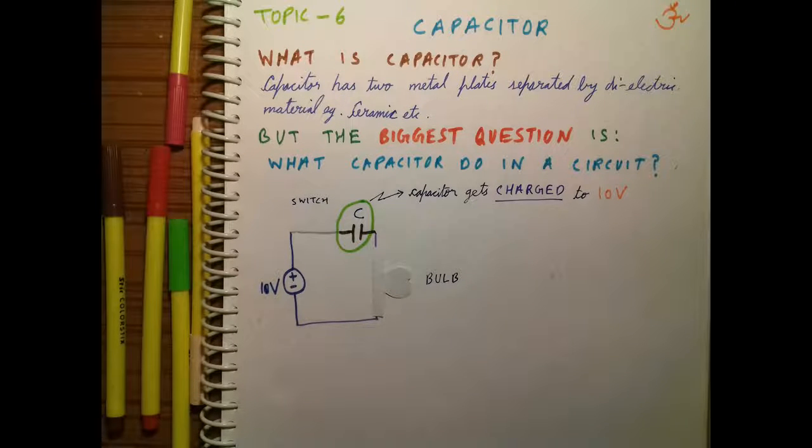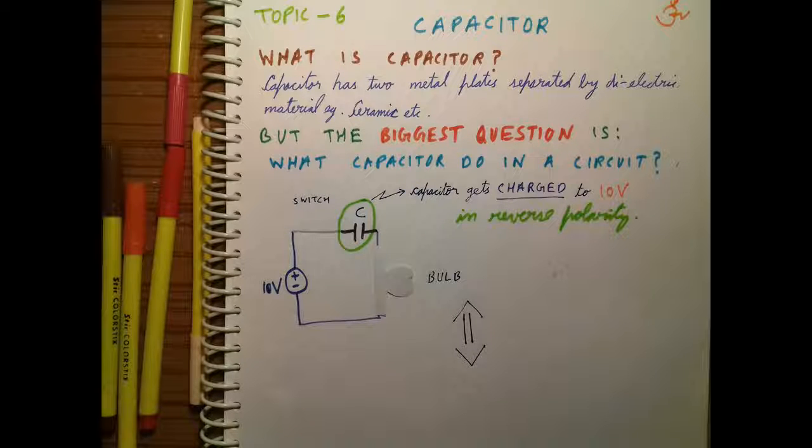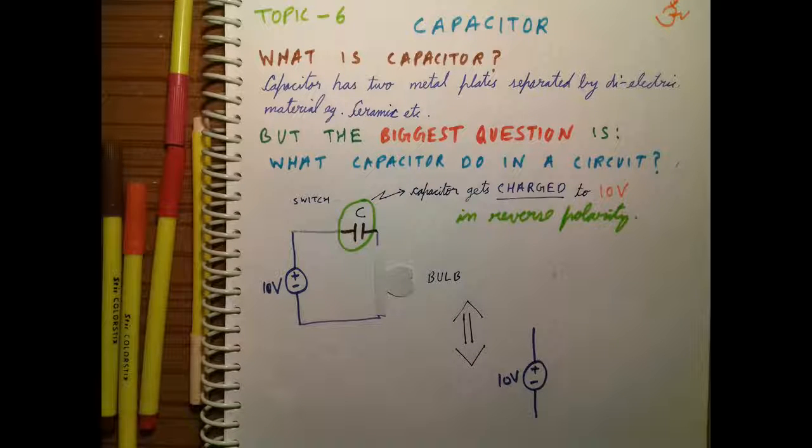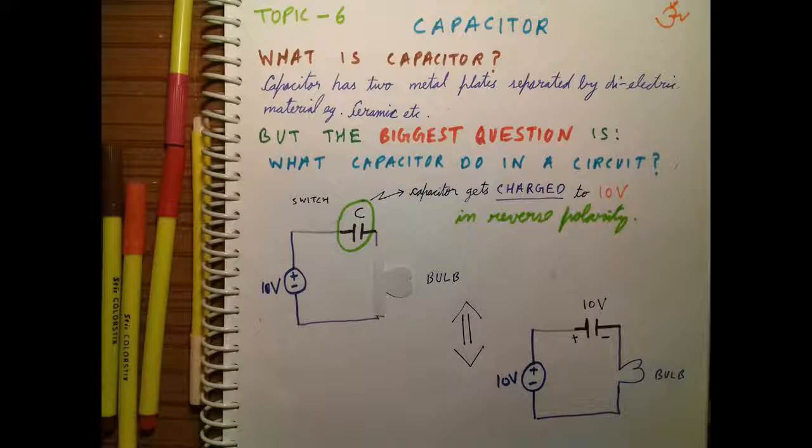To understand this statement, let us see a circuit equivalent to the present condition. Here the capacitor is charged to 10 volts with the polarities as shown on the screen. This means the capacitor acts like a 10-volt DC source, as shown in orange color on the screen.